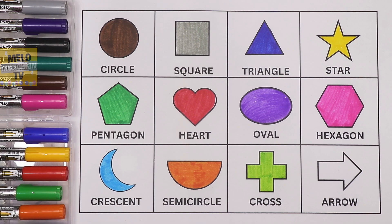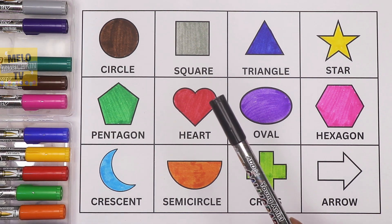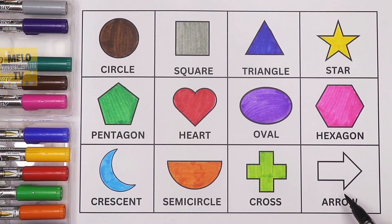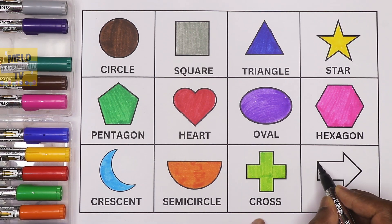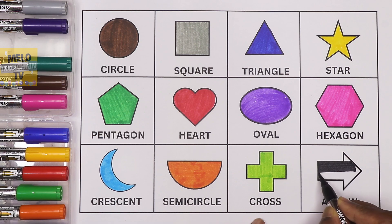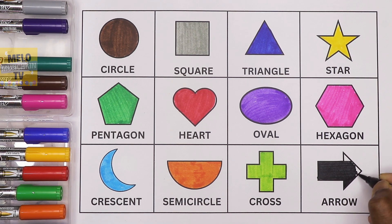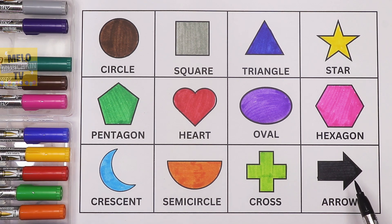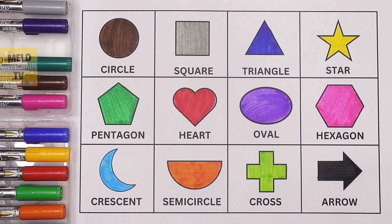And finally I'll take black color to color this shape. This is an arrow. Okay, so now it is a black arrow, where arrow is the shape and black is the color. So we have completed our 12 shapes and 12 colors!